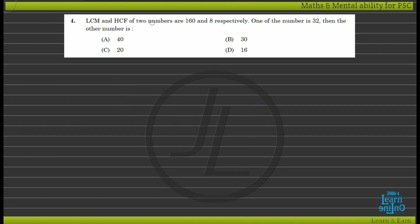LCM and HCF of 2 numbers are 160 and 8 respectively. One of the numbers is 32, then find the other number.